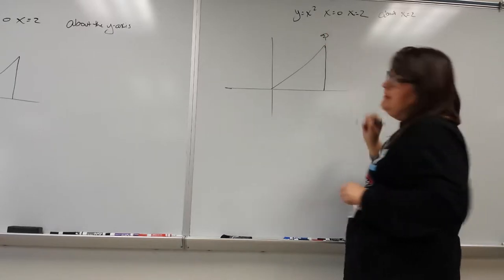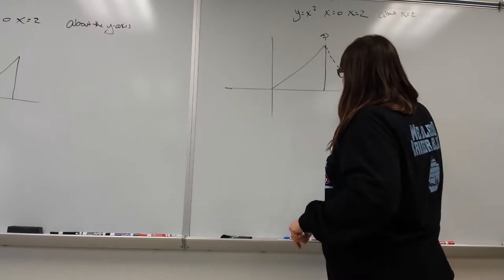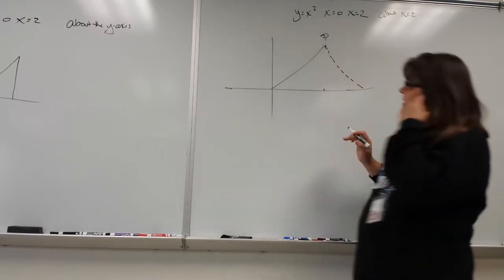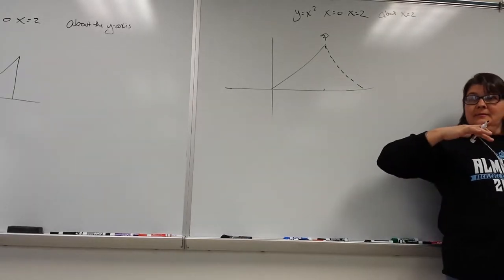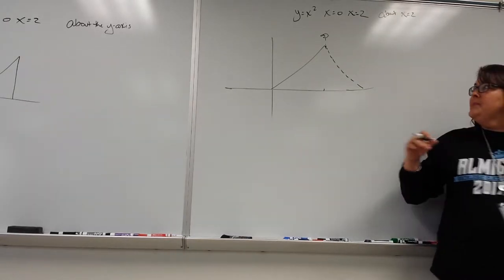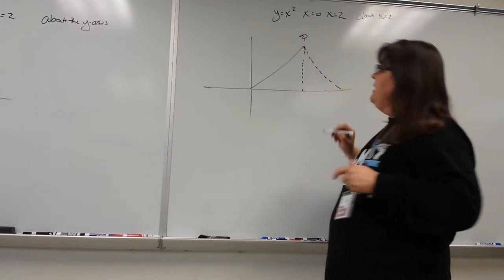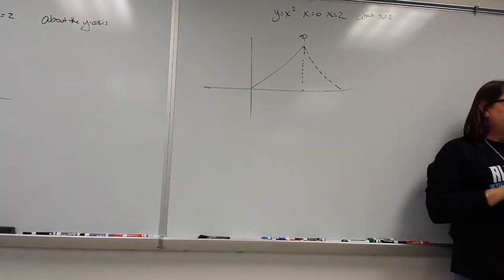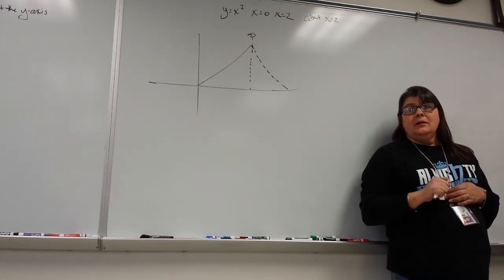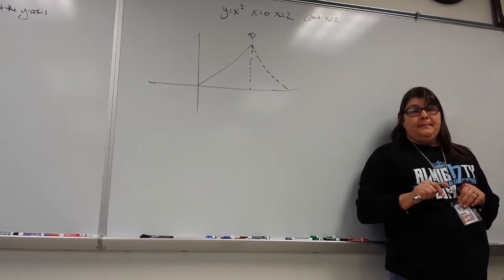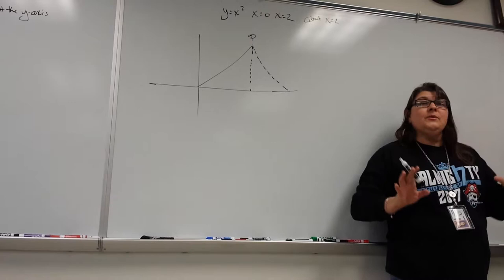So we want to do y equals x squared, x equals zero to x equals two, about the x equals two line — so about this guy here. If we do that, what you end up with is a Hershey's Kiss upright. Is it a solid Hershey's Kiss or is there a hollow in the middle? It's solid because there's no space missing — it's filled all the way through.